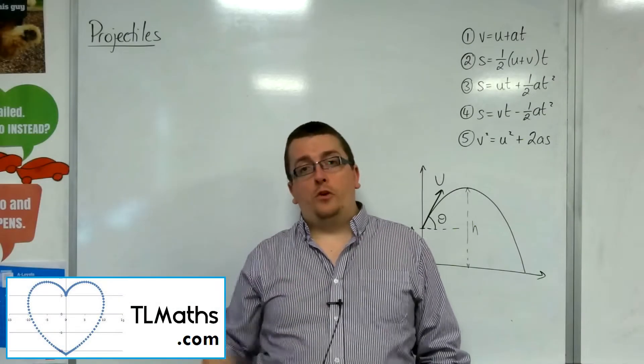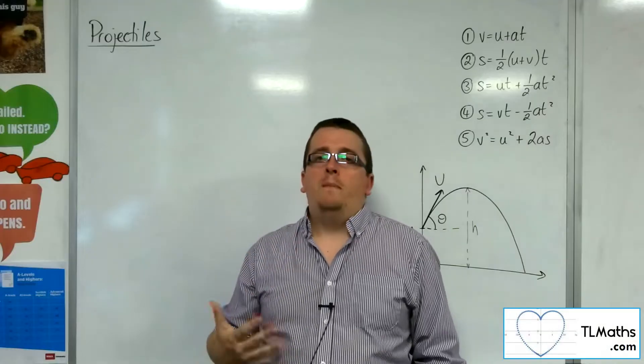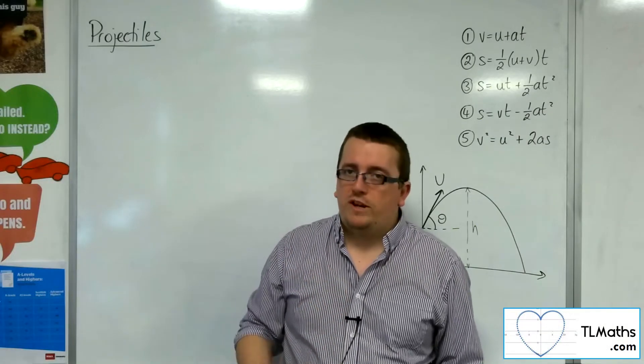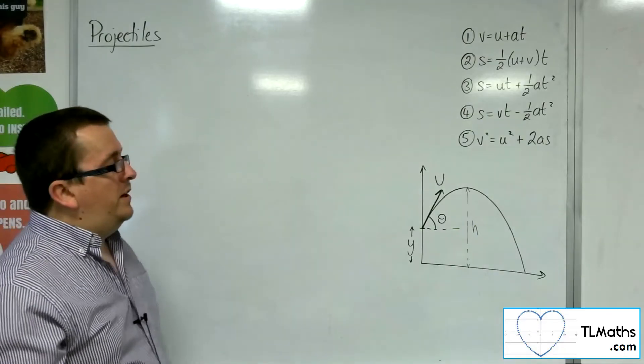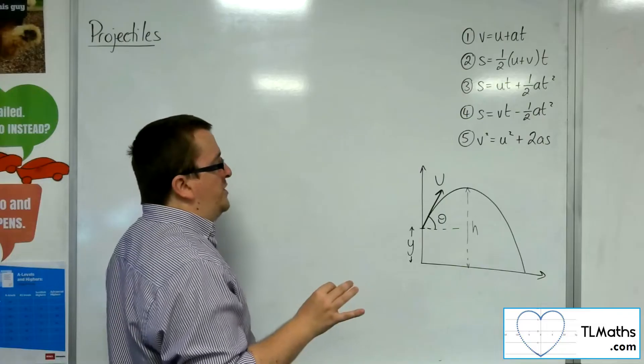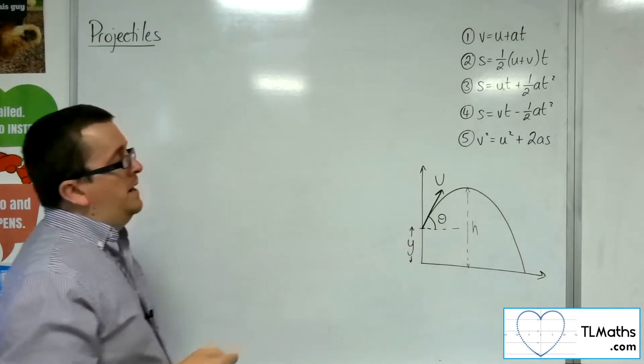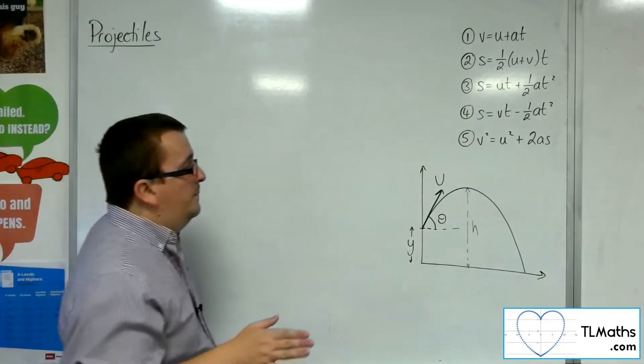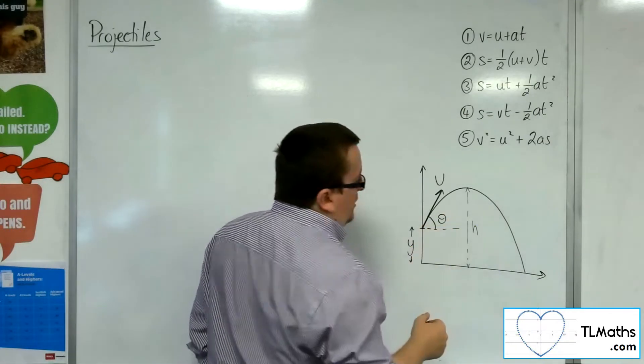So in this video, what I want to do is derive a formula for the maximum height that a particle will reach when it's been projected. So I'm going to do it in a general case here, where it's not projected from 0,0, it's projected from y metres above the ground, with an initial speed of u metres per second, and an angle of theta to the horizontal.